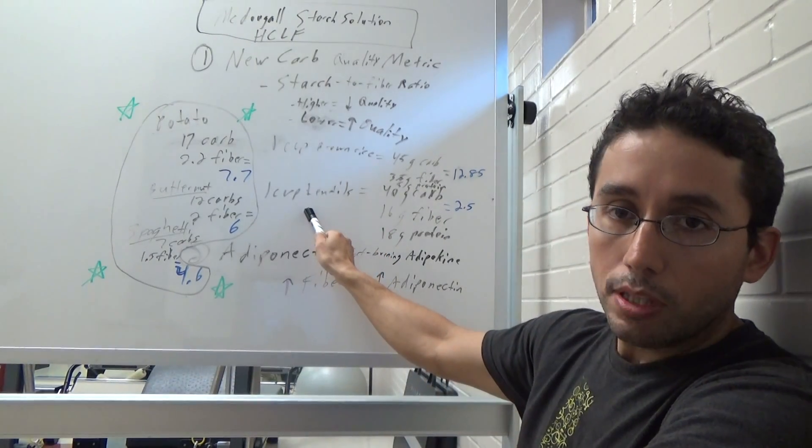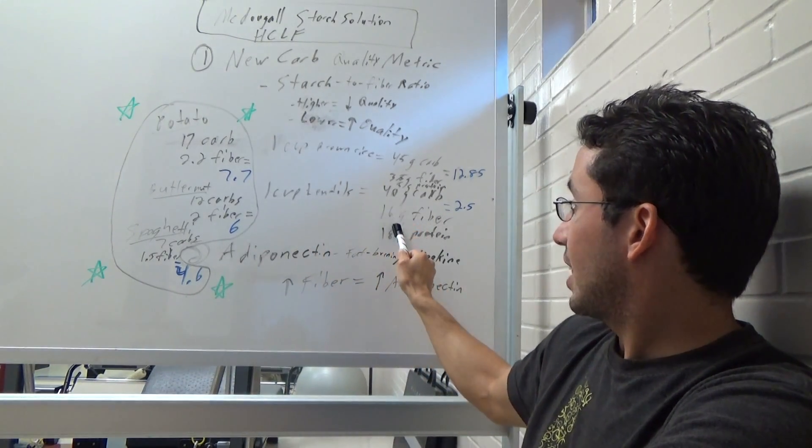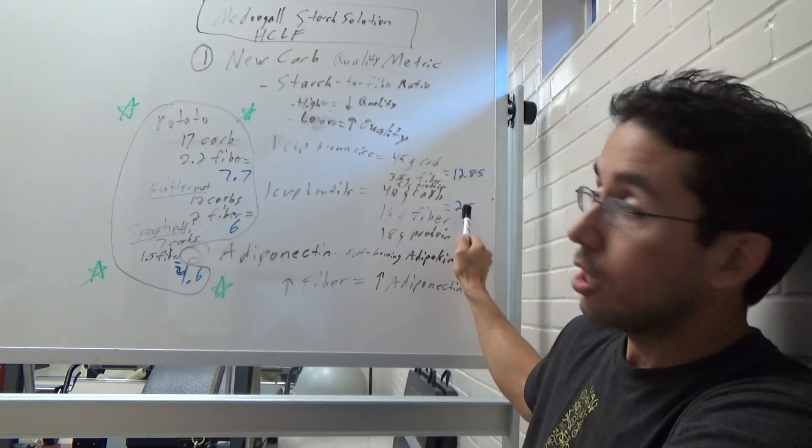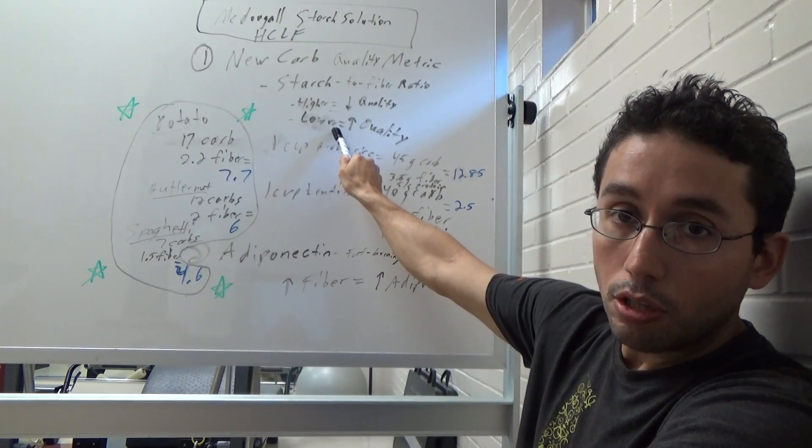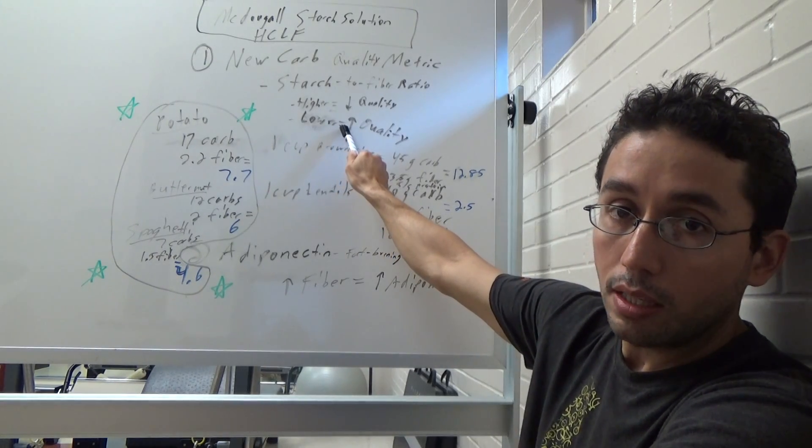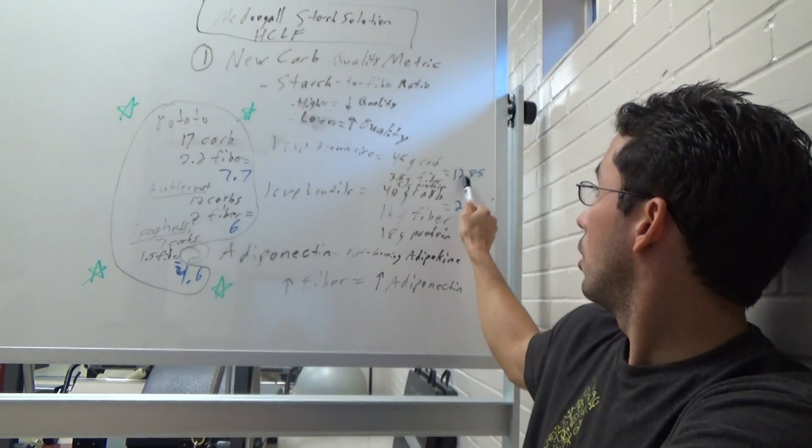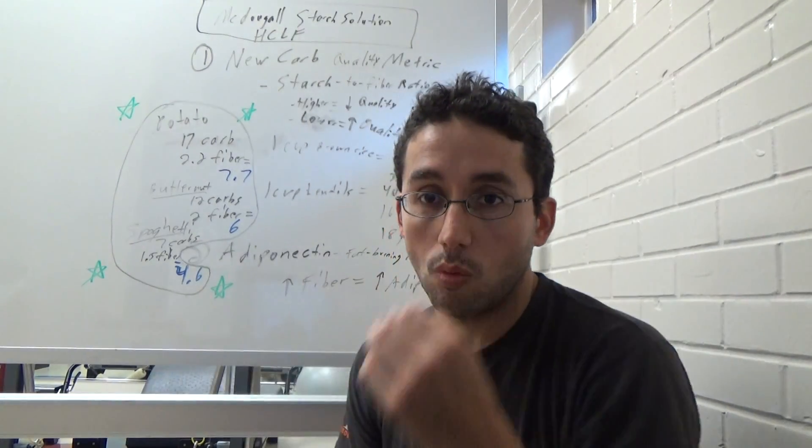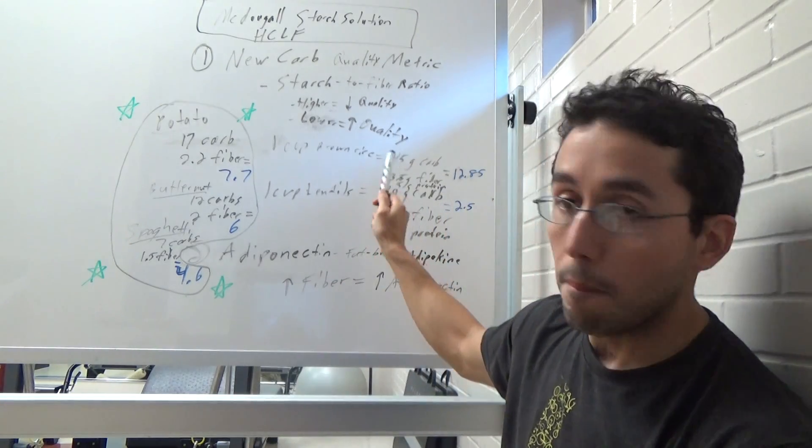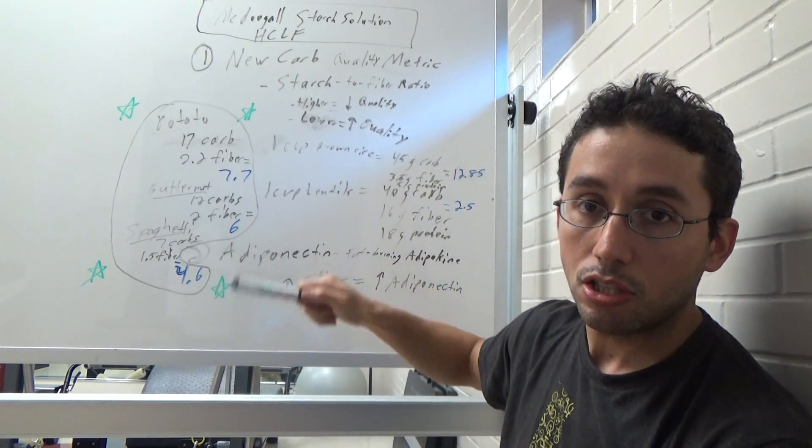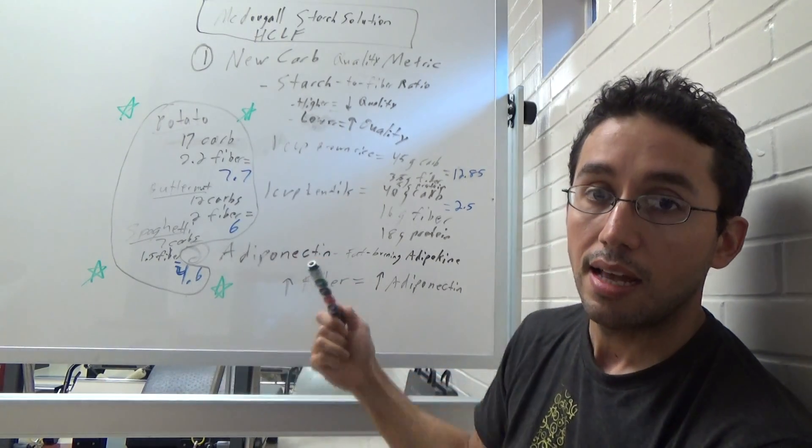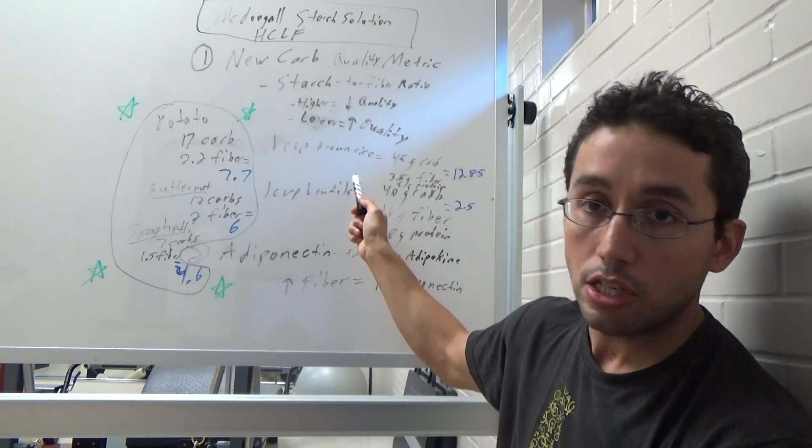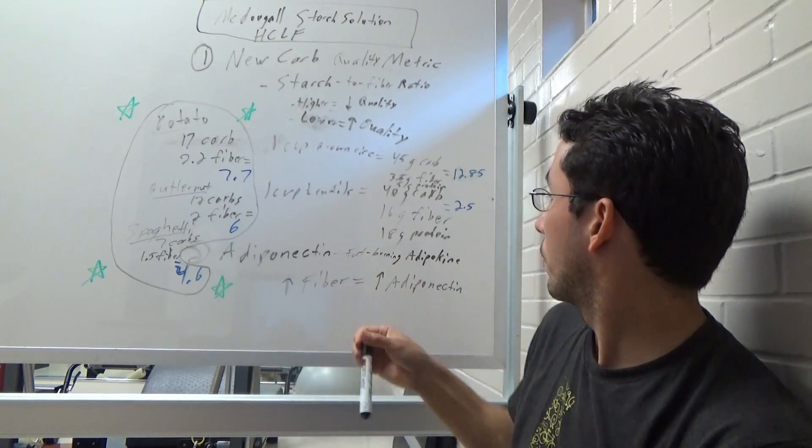Here, we have one cup of lentils. 40 grams of carbs, 16 grams fiber, 18 grams protein, 2.5 is the ratio. Look what I just said. A lower ratio indicates higher quality carbohydrates. Look at the beans, 2.5, the rice, 12.85. Also, there's another reason why a lot of vegans can't get real lean or lose weight and I think this is a big component. It's not just processed versus unprocessed. That doesn't really specify enough as this video does with the ratio of starch to fiber.